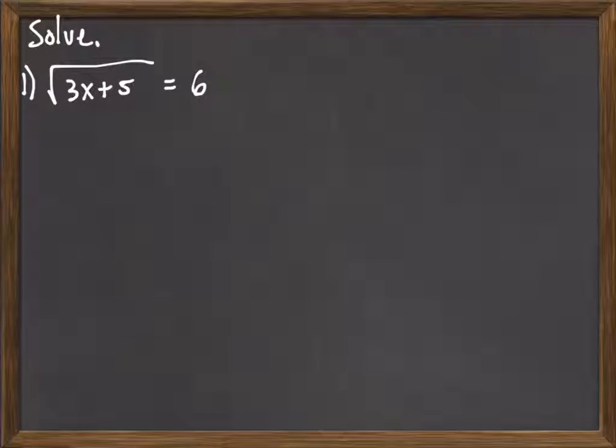Okay, so now we're going to look at solving some radical equations. So here we have square root of 3x plus 5 equals 6, and we'd like to get rid of the square root so that we can solve the equation.